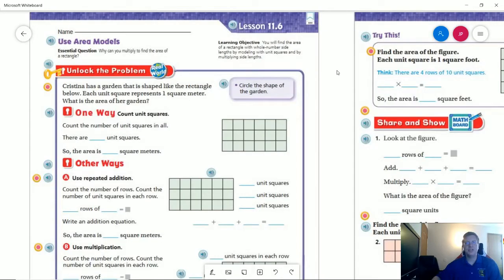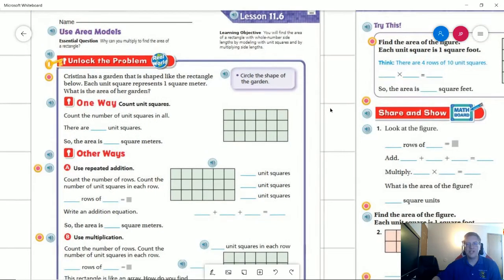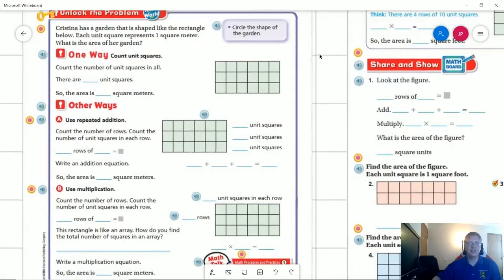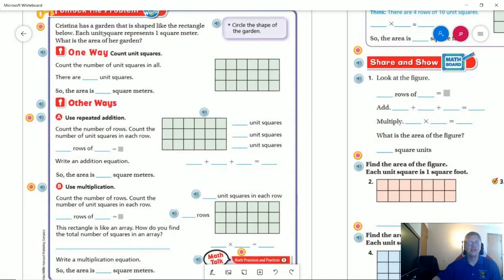So let's go ahead and take a look at our Unlock the Problem. This is for lesson 11.6. We are going to have a question later on in the homework about the three different ways that we can find an area.